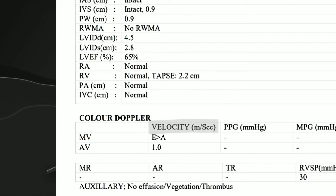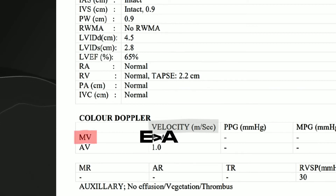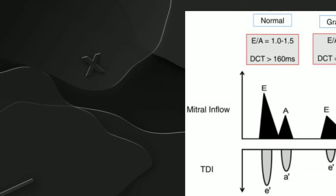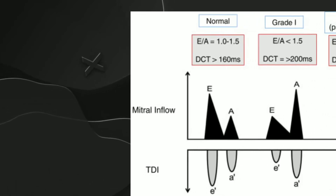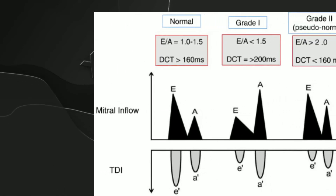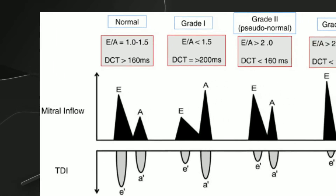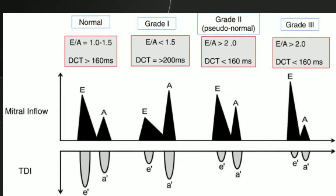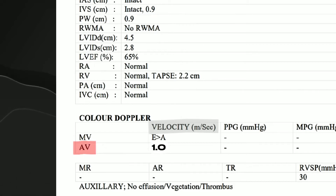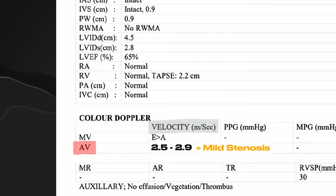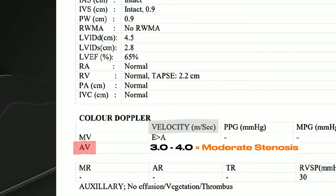Next is velocity. In the mitral valve, the velocity during the E wave should be greater than the velocity during the A wave — meaning the ratio of peak velocity of blood flow from left ventricular relaxation in early diastole (E wave) to peak velocity flow in late diastole caused by atrial contraction (A wave). For the aortic valve, the normal velocity is 1. In mild stenosis it's between 2.5 to 2.9, in moderate stenosis it's between 3 to 4, and in severe stenosis it's more than 4.